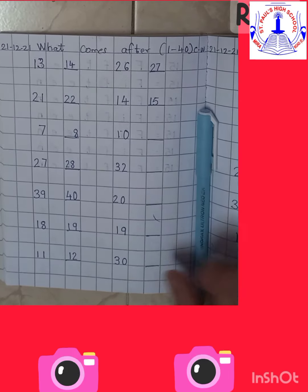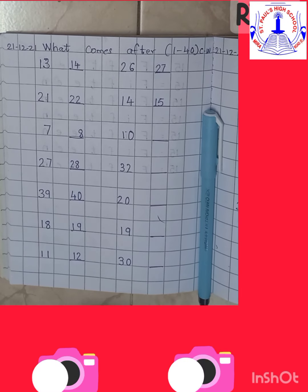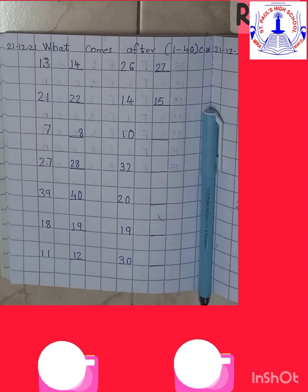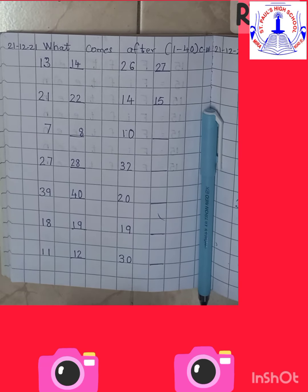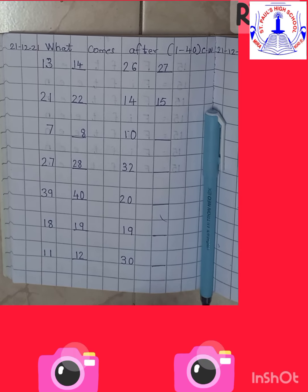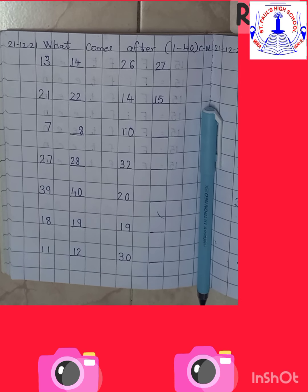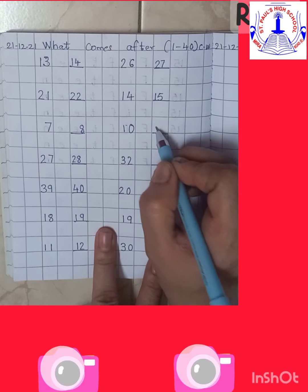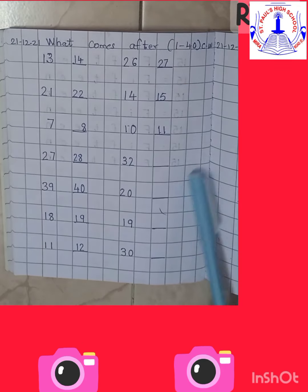Now what is the next number? Number 10. So let's start from number 1: 1, 2, 3, 4, 5, 6, 7, 8, 9, 10. What comes after 10? Yes — number 11. So come on children, write number 11.